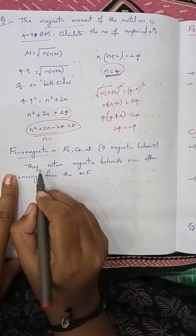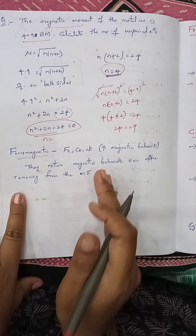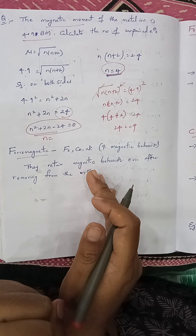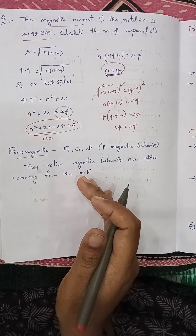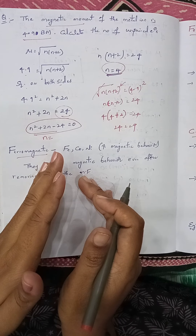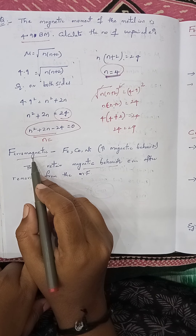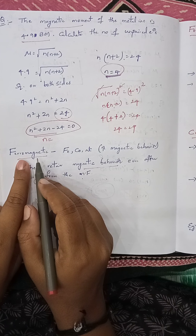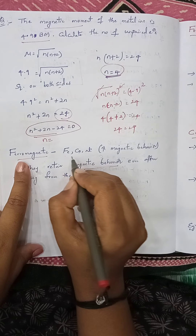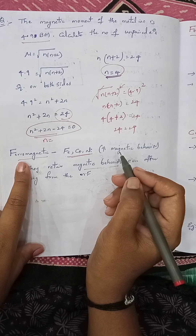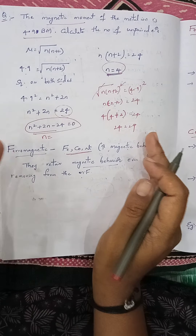Finally n(n+2) = 24. To find n, substitute values one by one: if n = 4, then 4 × (4+2) = 4 × 6 = 24. So n = 4. Either by using this technique or by the formula, we can easily find out the number of unpaired electrons if we know the magnetic moment μ.